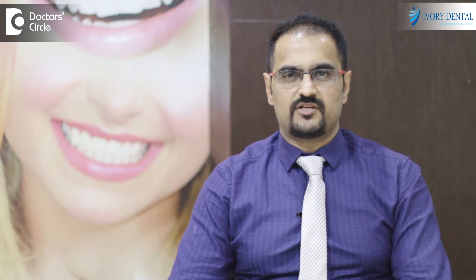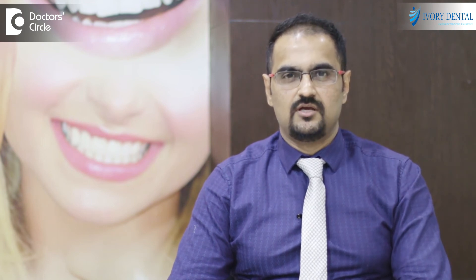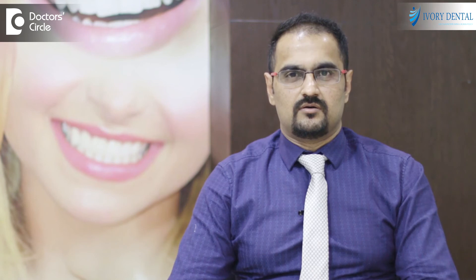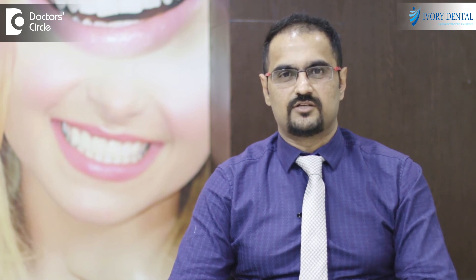Normally, a screw-retained restoration is given in the posterior region. If the angle of the implant is placed properly in the anterior region, we can always go for a screw-retained crown or bridge even for anterior restorations. Another basic advantage is that even in cases of less interclusal space, we can always go for a screw-retained restoration.